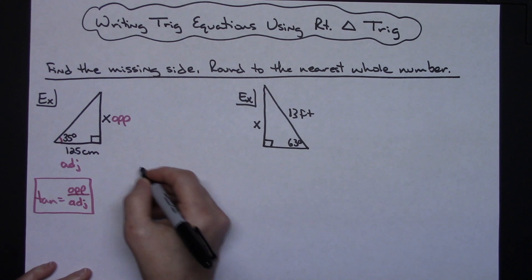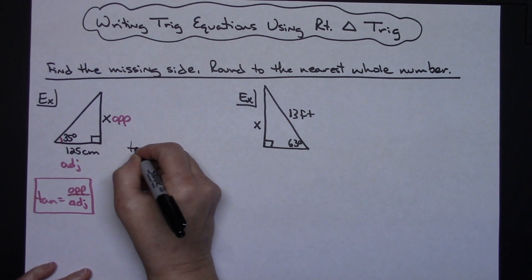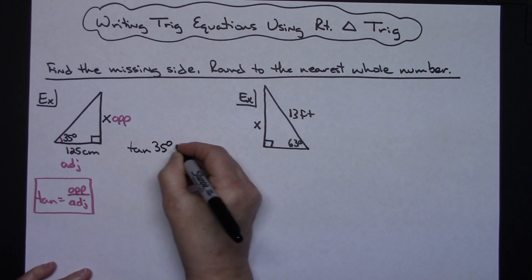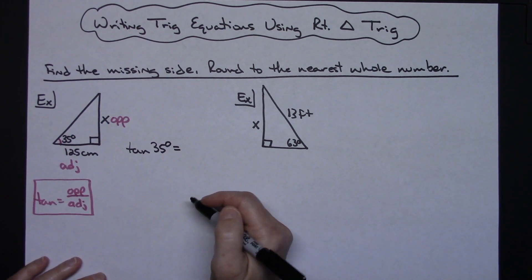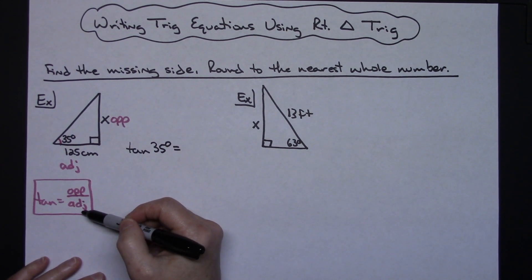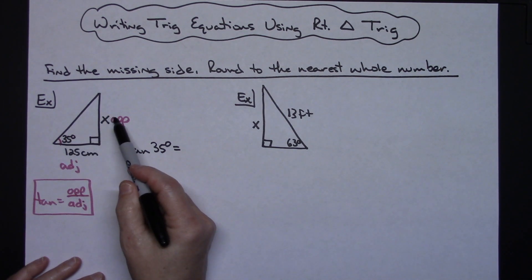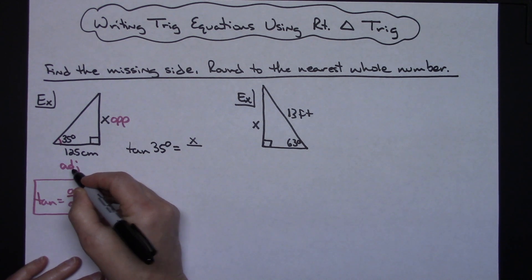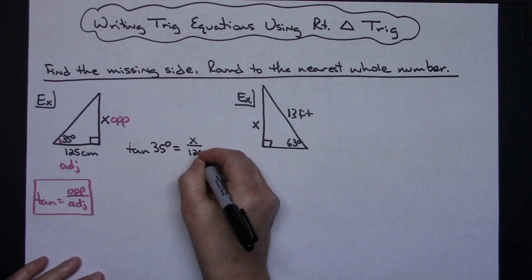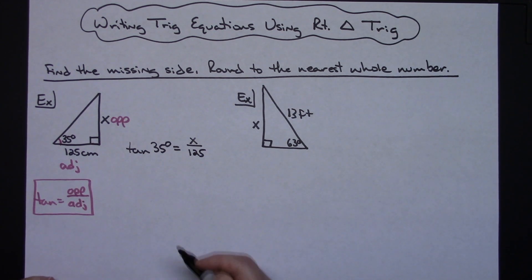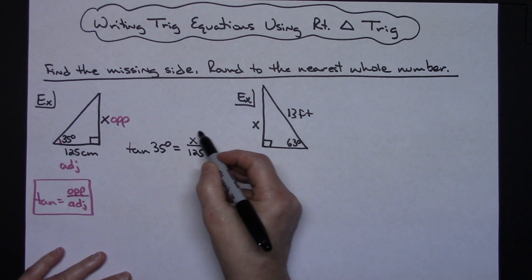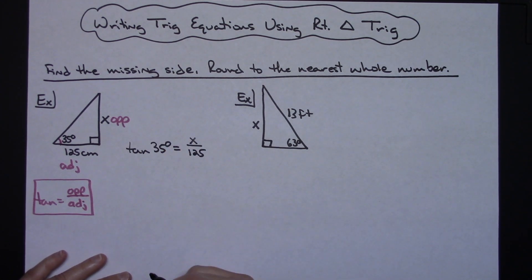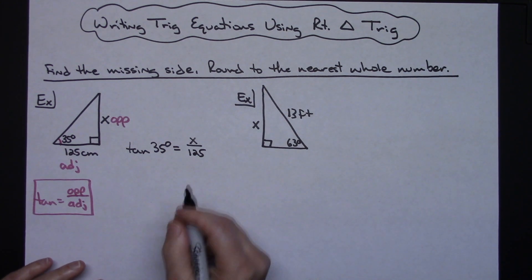I'm going to write as my equation: tangent of 35 degrees equals—what's it equal to? It's equal to opposite over adjacent, so my opposite side is X, that goes on top, and my adjacent side is 125. So now you've written your trig equation: tan(35°) = X/125. Now that you have a trig equation with one variable, you can solve this equation for X.